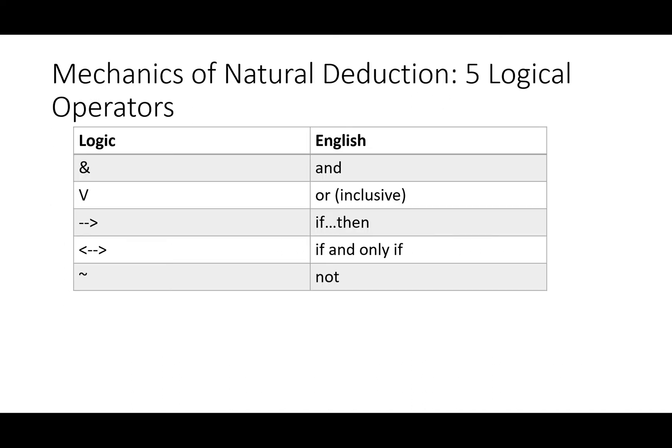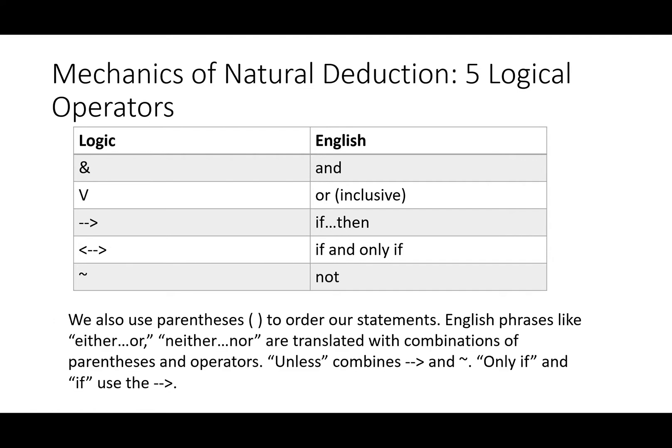Here's the operators we'll be using. Ampersand for and. V for or. It's the inclusive or. Arrow for if then. Double arrow for if and only if. And tilde for not. We also use parentheses to order our statements. English phrases like either or and neither or are translated with combinations of parentheses and operators. Unless combines arrow and not. And only if and if both use the arrow although they do use it a little bit differently.